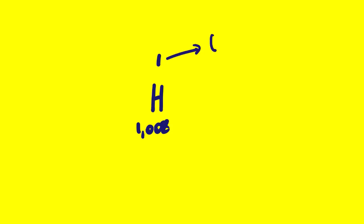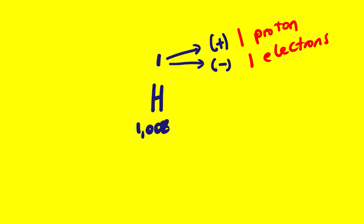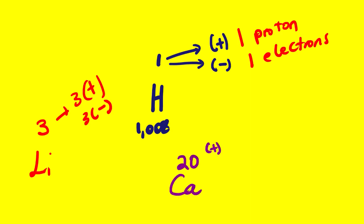The atomic number also tells us the number of protons and electrons within that atom. For hydrogen, atomic number 1 means one proton and one electron. For lithium, atomic number 3 means three protons and three electrons. For calcium, element number 20, it has 20 protons and 20 electrons. Note that we are talking about neutral atoms, not ions. With this information, we can draw different atomic structures.